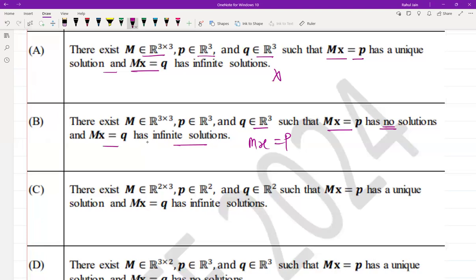The reason is that if Mx = p has no solution, the matrix M and vector p must be such that p is not in the column space of M, meaning the system is inconsistent. For Mx = q to have infinite solutions, M must be rank deficient—that is, rank should be less than 3—and q should be in the column space of M. It is possible for M to be singular with another vector q in the column space.